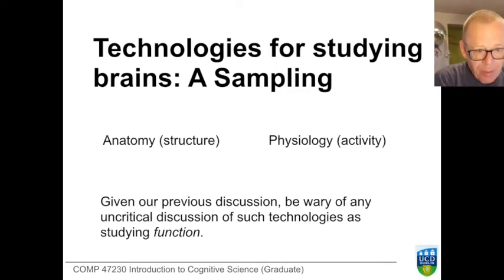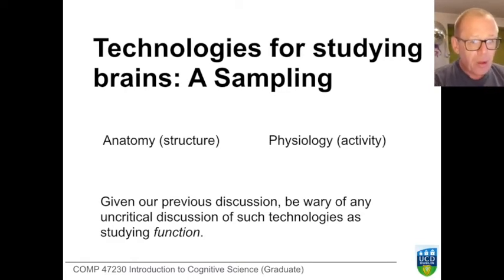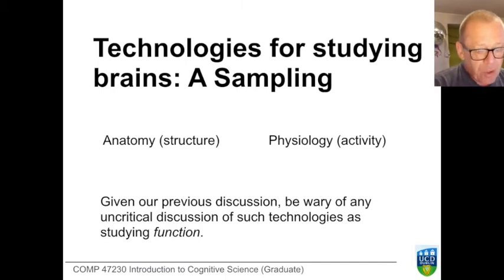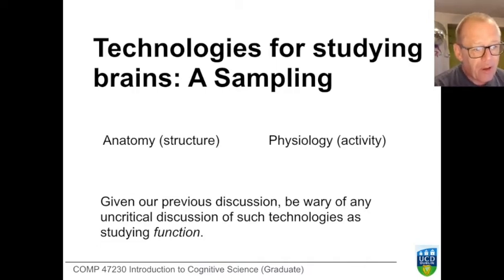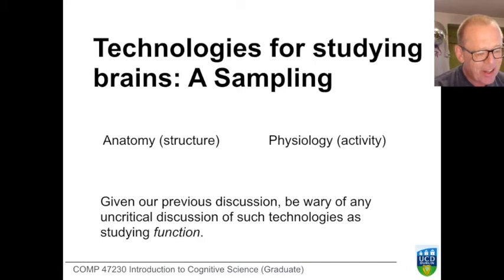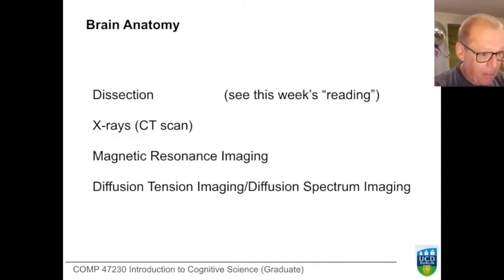We're going to move now, having done some preliminary work, to looking at some of the array of technologies available to study the brain. We're going to distinguish between those that look at structure — those are anatomical studies — and physiology — those that study the goings-on. When it comes to the heart, for example, structure refers to the four walls, the valves, the connections in and out. A physiological account refers to its activity as a pump in maintaining circulation. Structure is going to be easier to study than physiology because physiology requires interpretation in terms of function.